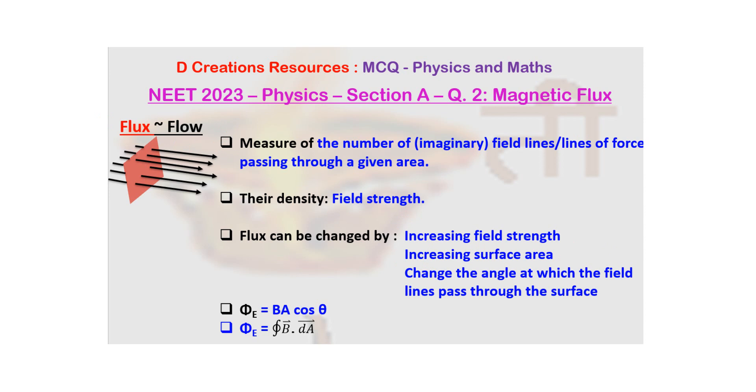So this also gives you some idea about the mathematical expression that will be there for flux. So flux can be written as BA cos θ, where B comes from the magnetic field, A comes from the area. And in the term cos θ, θ is the angle at which the field lines are passing through the surface.